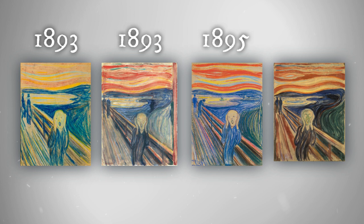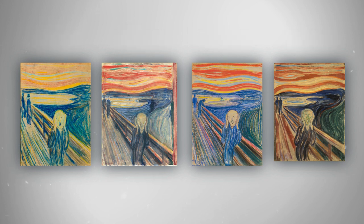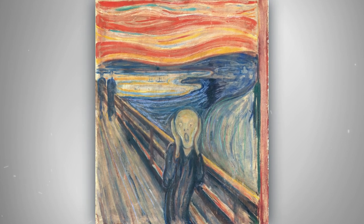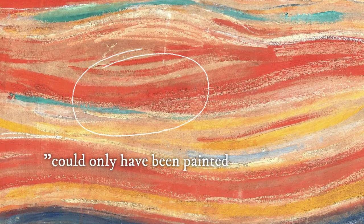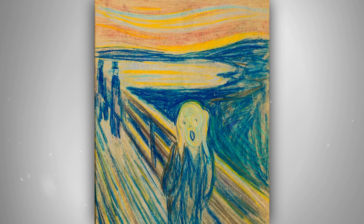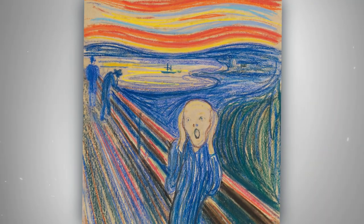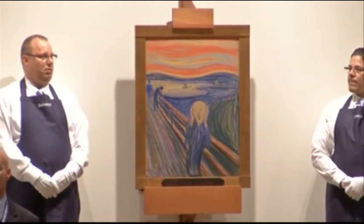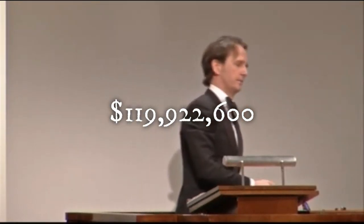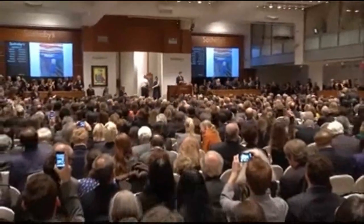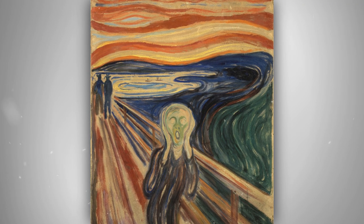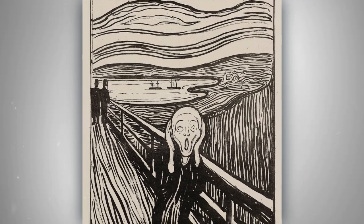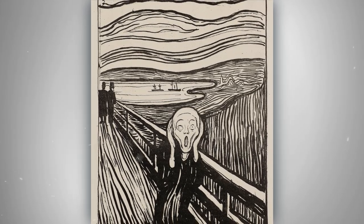Between 1893 and 1910, the artist created three other versions of the same subject — two in paint and two in pastels. The first painted version was the first exhibited, and it has a barely visible pencil inscription reading 'could only have been painted by a madman.' A pastel version from that year may have been a preliminary study. The second pastel version, from 1895, was owned by a German-Jewish art collector and was sold for $119,922,600 at Sotheby's Impressionist and Modern Art Auction. The second painted version dates from 1910, during a period when Munch revisited some of his prior compositions. Additionally, Munch created a lithograph stone of the composition in 1895, from which several prints produced by Munch survive.